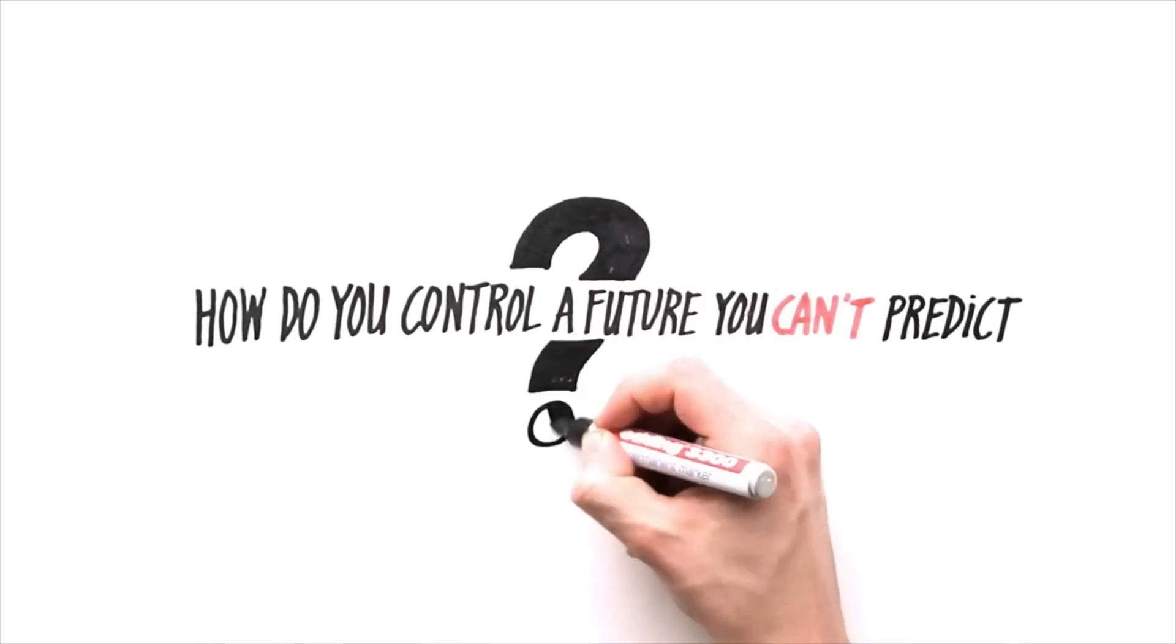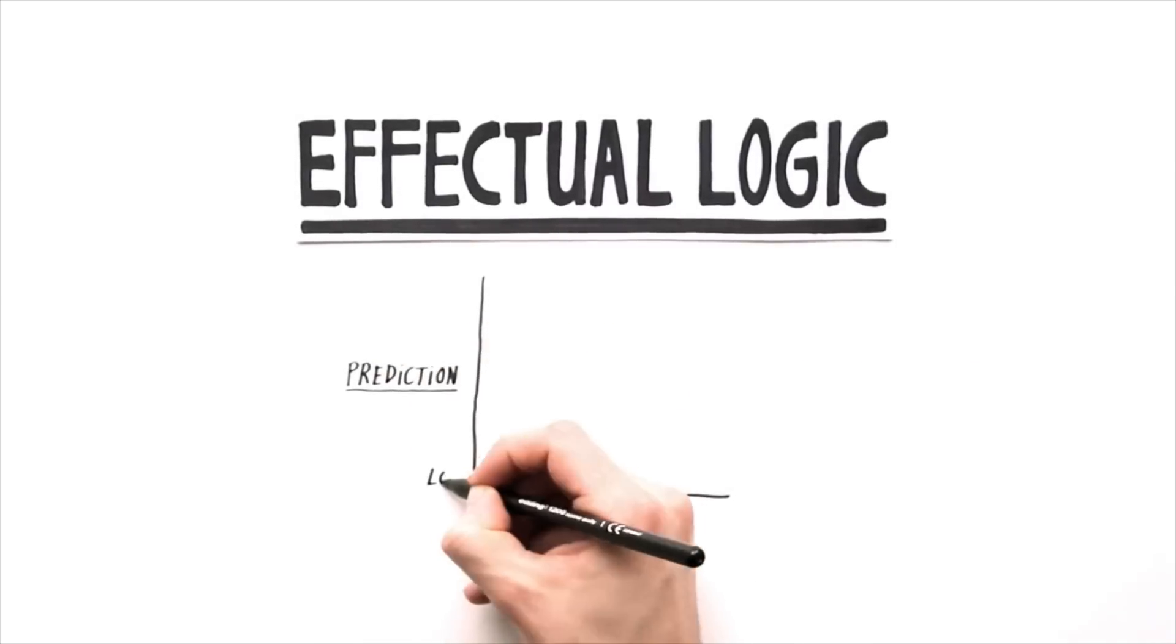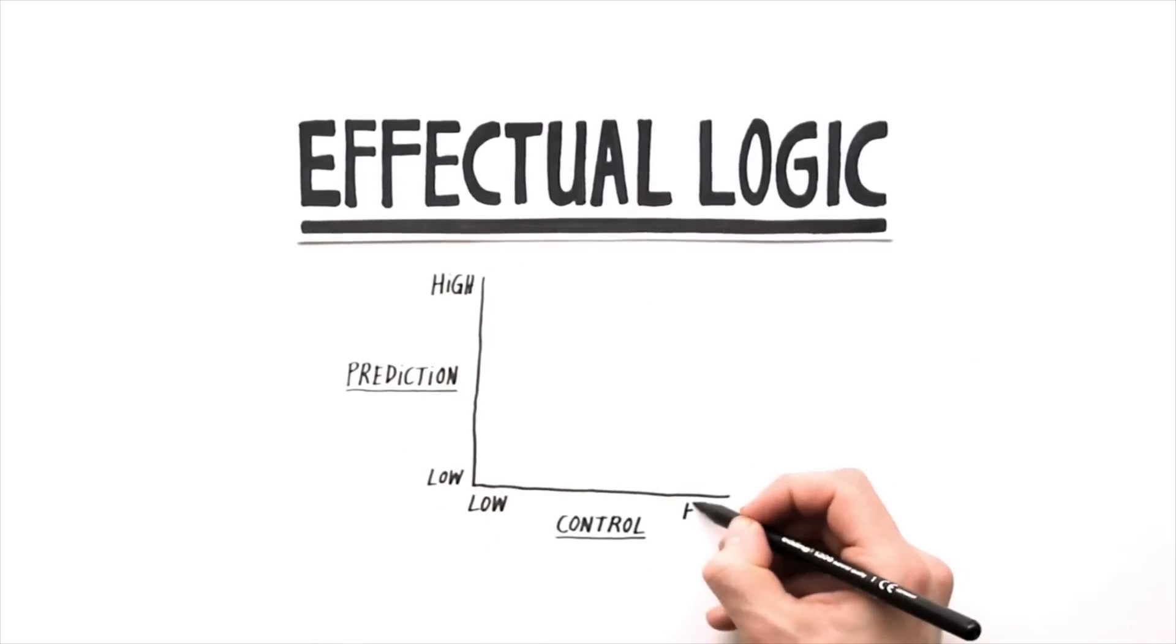But how do you control a future you cannot predict? In 2001, Sarah Sarasvati and Stuart Reid discovered effectuation.